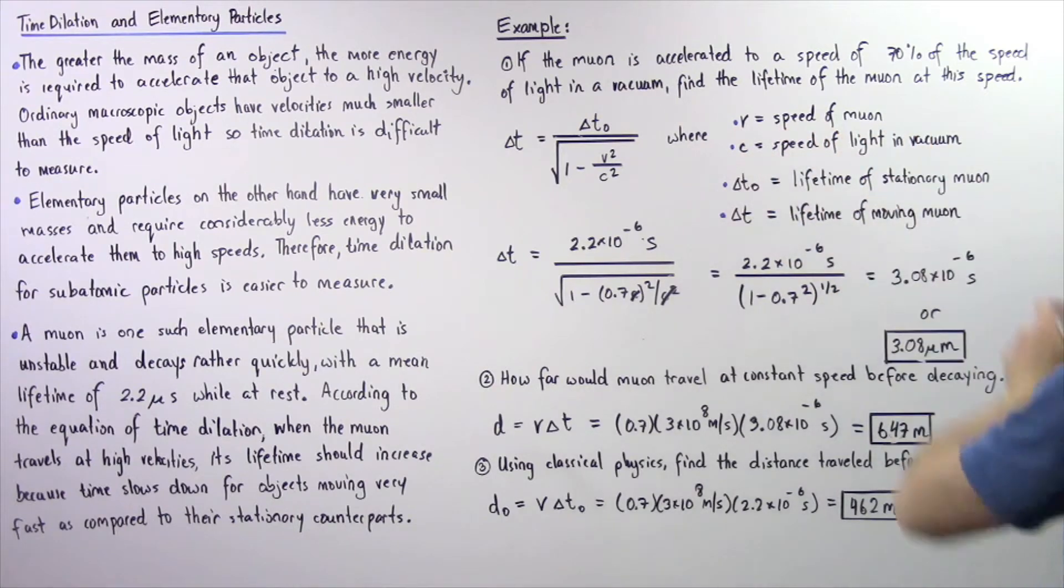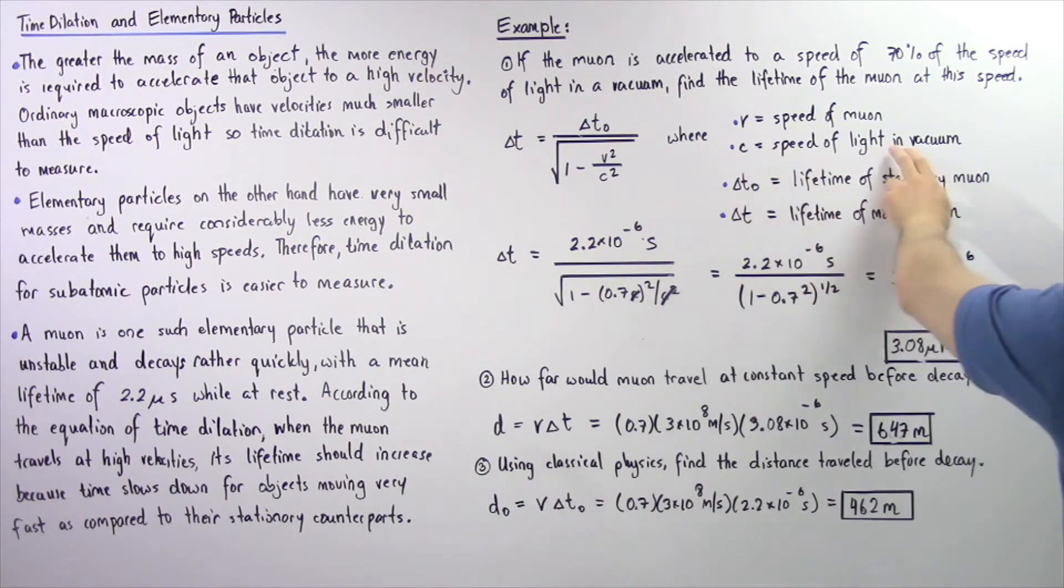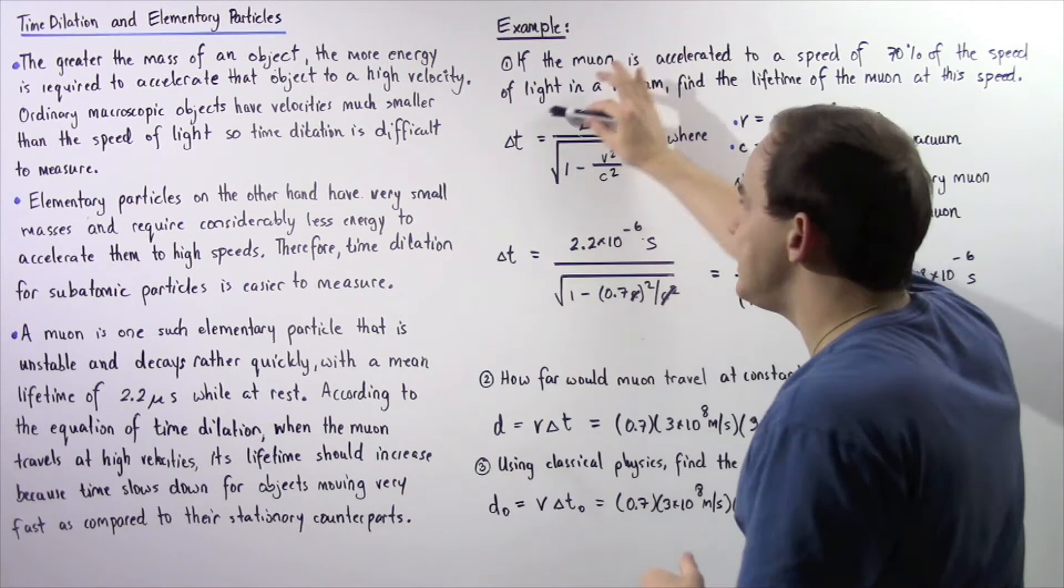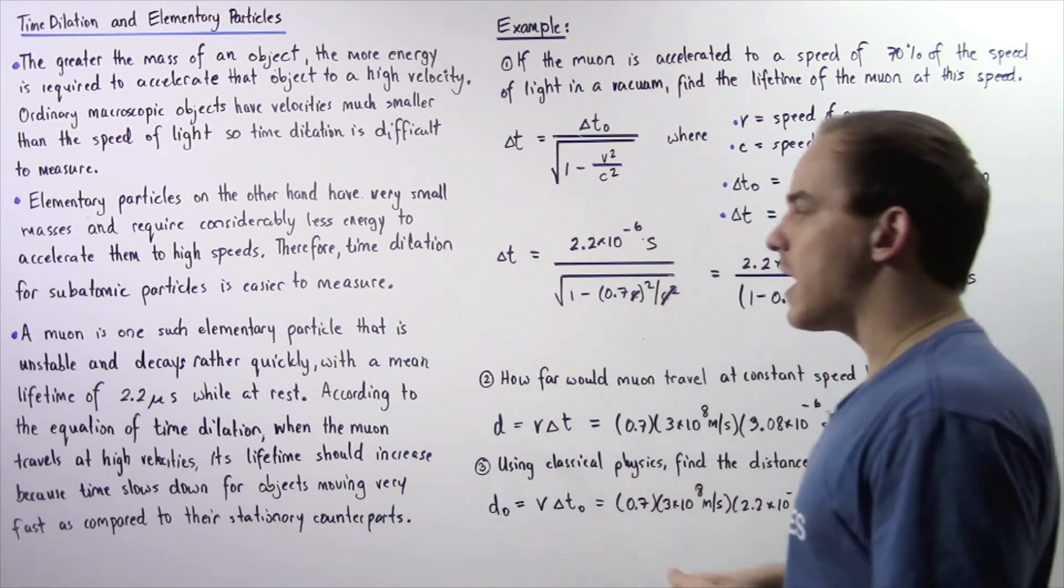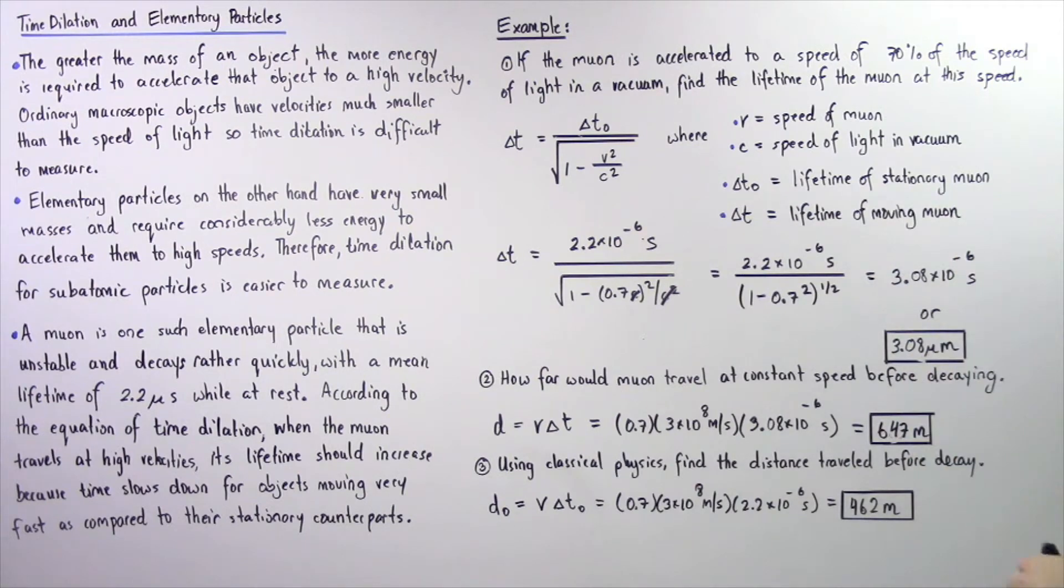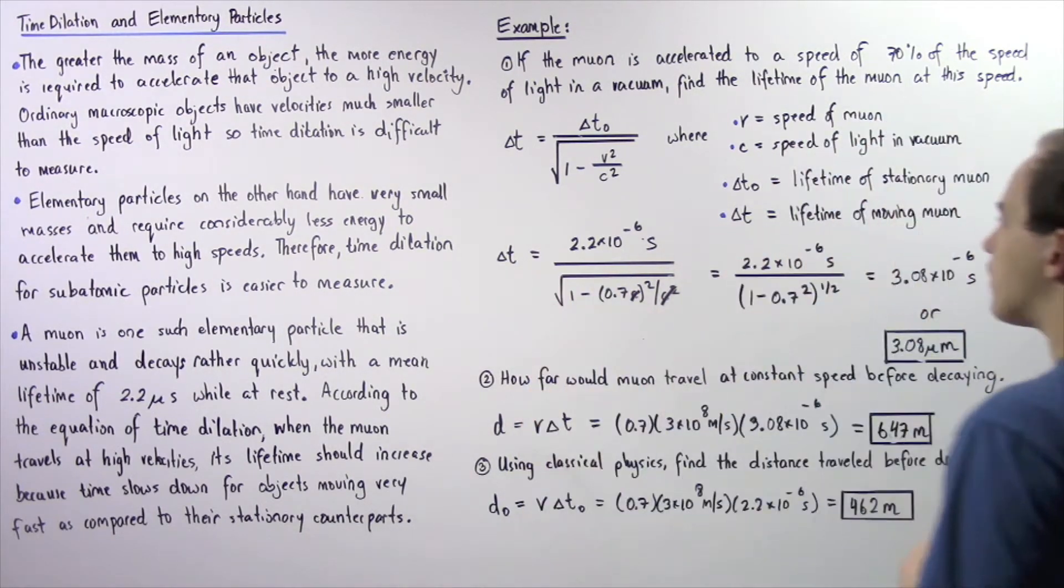Now velocity v is the speed of the muon. It's 70% of the speed of light in a vacuum, c is the speed of light in a vacuum, and this delta t₀ is the lifetime of our muon when it is at rest, when it's stationary. So let's plug in our values.